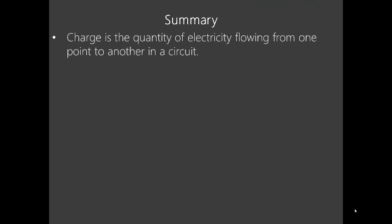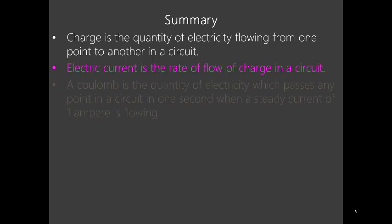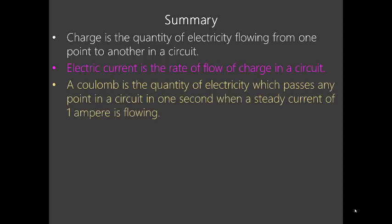We looked at charges — a quantity of electricity flowing from one point to another in a circuit — and we looked at electric current as the rate of flow of charge in a circuit. Sometimes they just ask you to define current; electric current and current are the same thing. And the coulomb, we define it as a quantity of electricity, that is the charge, which passes any point in a circuit in one second.